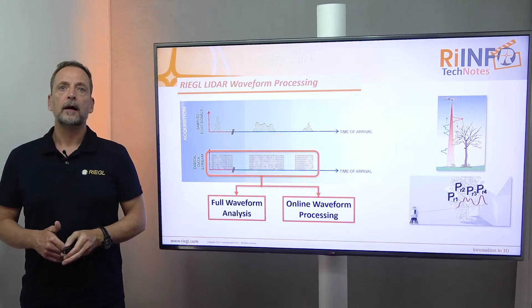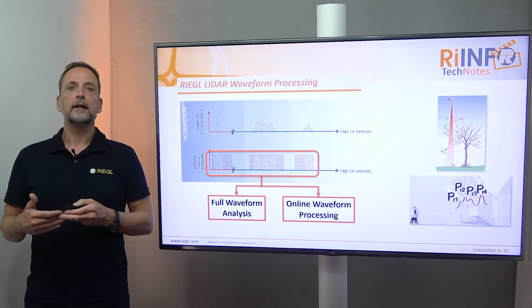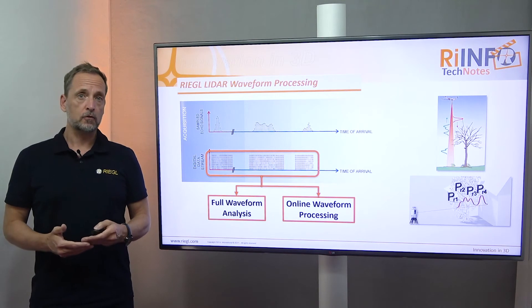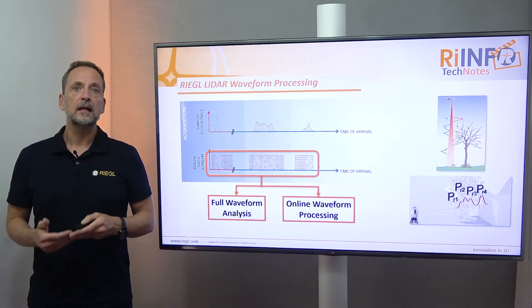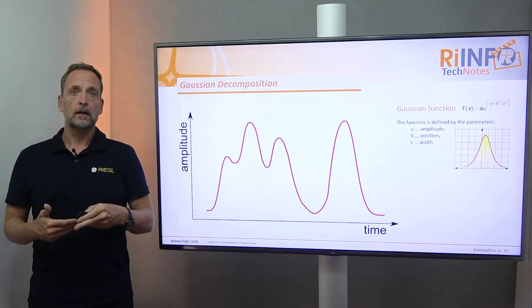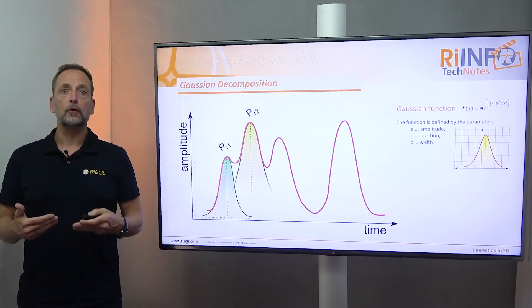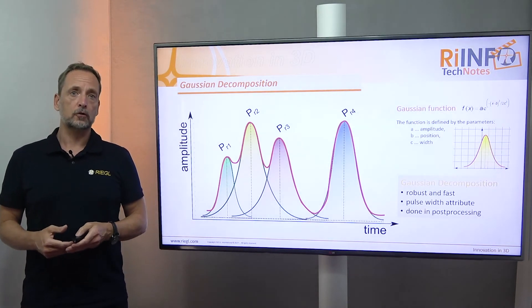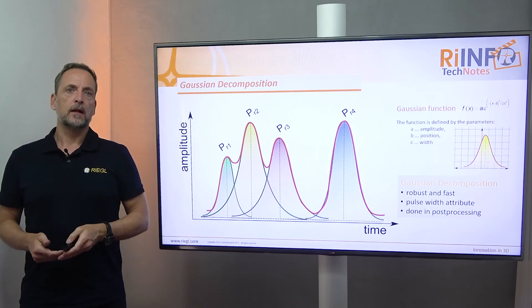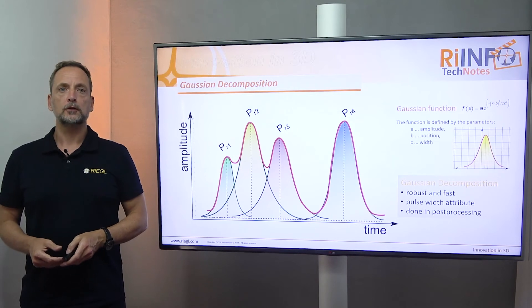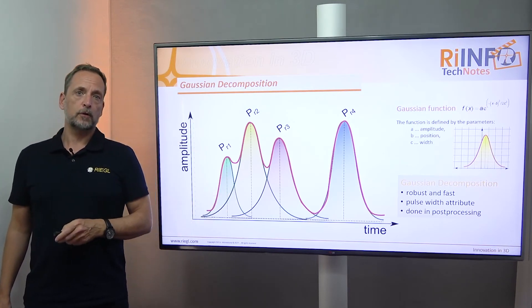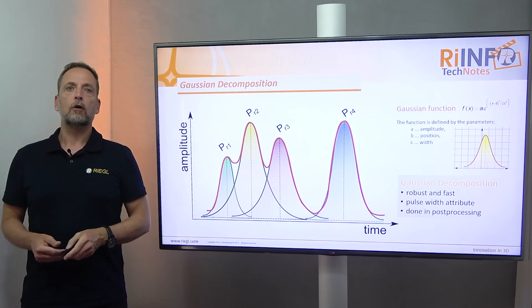Let us start with full waveform analysis. Full waveform analysis is done offline in post-processing. This means that the digital data stream containing target information has to be stored either on the instrument or an external mass storage device. In post-processing, the original analog signal is extracted out of the digital data stream. Next, the full waveform analysis algorithm fits Gaussian curves into the single peaks of the echo signal — this is called Gaussian decomposition. The peak of each curve gives the exact range position on the time axis. The amplitude is the echo signal strength from which the reflectance attribute value is calculated. The pulse width is an extra attribute which can be used for data quality classification. That was the principle of full waveform analysis.